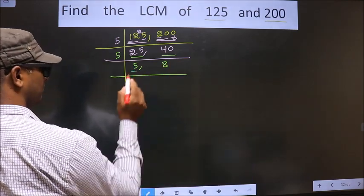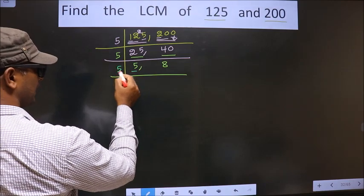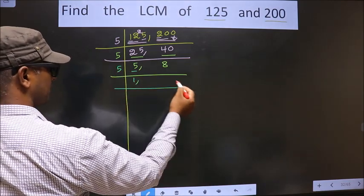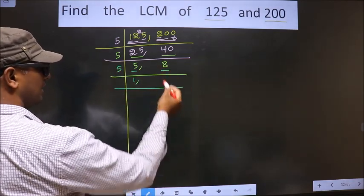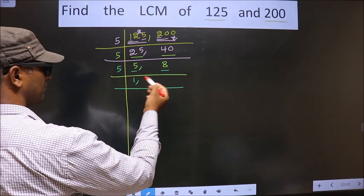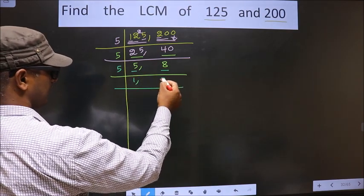Now here we have 5. 5 is a prime number, so we take 5 once 5. The other number is 8. 8 is not divisible by 5, so you write down 8 as it is.